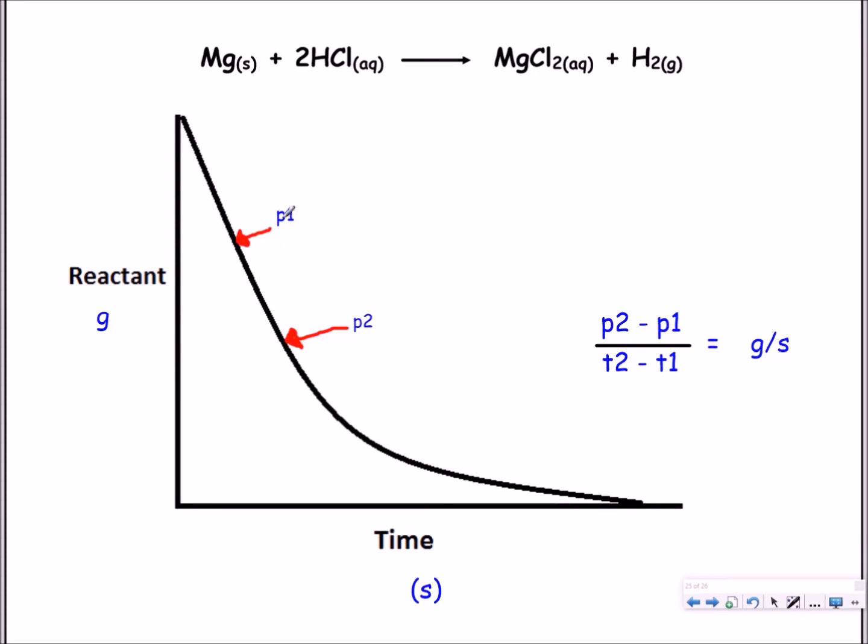You pick two points, 0.1 and 0.2, put them into this equation over here and you will get your answer in grams per second. Now this is how fast magnesium gets used up and not how fast it is produced.